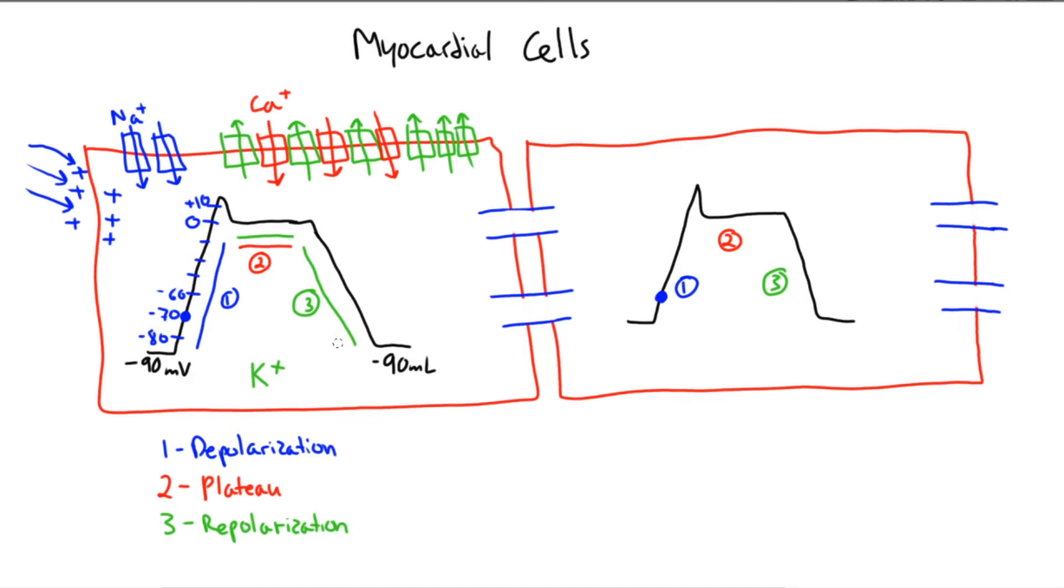And that is the difference in voltage between the inside of a cell and the outside of the cell. The resting membrane potential in a myocardial cell is negative 90 millivolts. So the inside of a cell is negatively charged at rest without any stimulation.